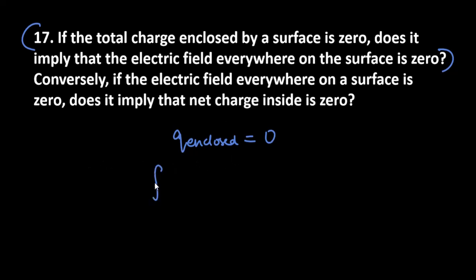If we talk about Gauss's Law, what is ∮E·ds = q_enclosed/ε₀, and here we have to say that q_enclosed is zero.